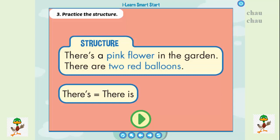B3: Practice the structure. There's a pink flower in the garden. There are two red balloons.